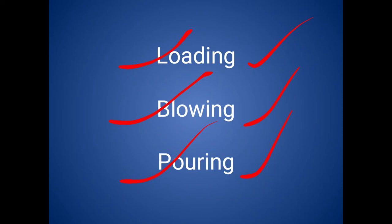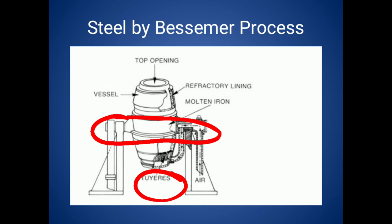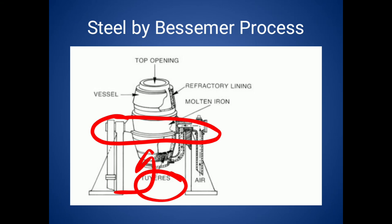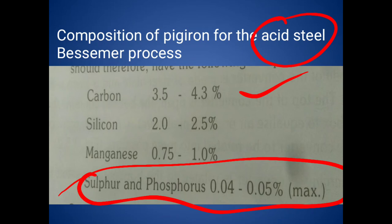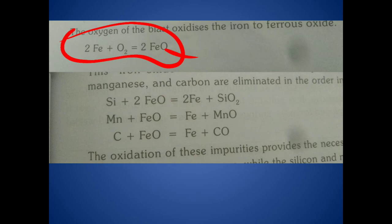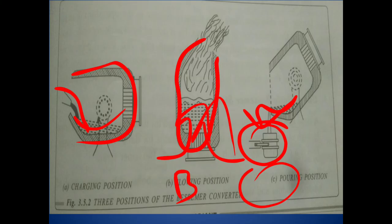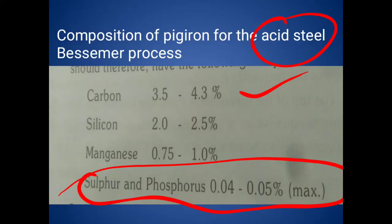Coming to the operation: we oxidize the impurities like silicon, manganese, and carbon. In the blowing section, which is very important, we eliminate the impurities through chemical reactions. When we supply hot air from the bottom of the converter, iron reacts with oxygen to form ferrous oxide (FeO). This FeO then reacts with silicon, manganese, and carbon already present in the molten pig iron, producing slag — SiO₂, manganese oxide — and carbon monoxide gas, which escapes into the atmosphere.